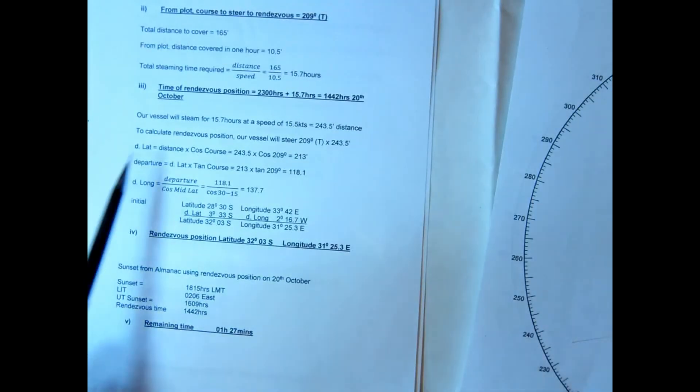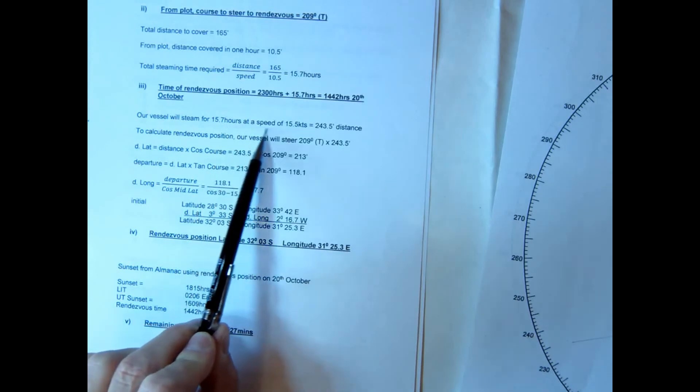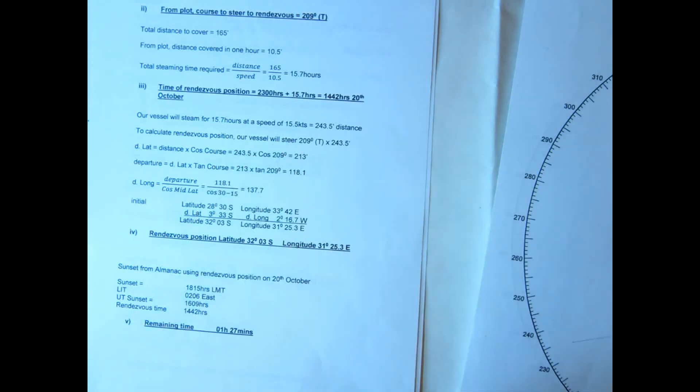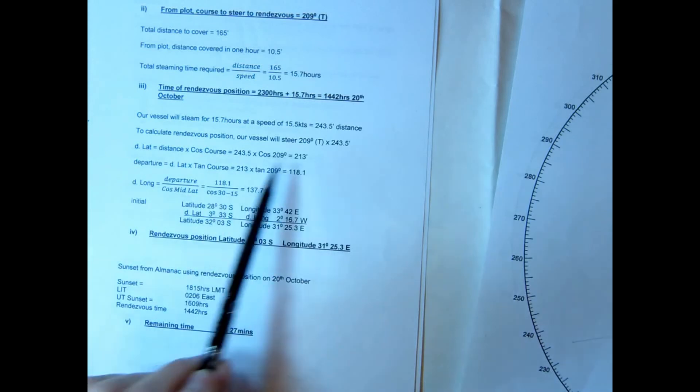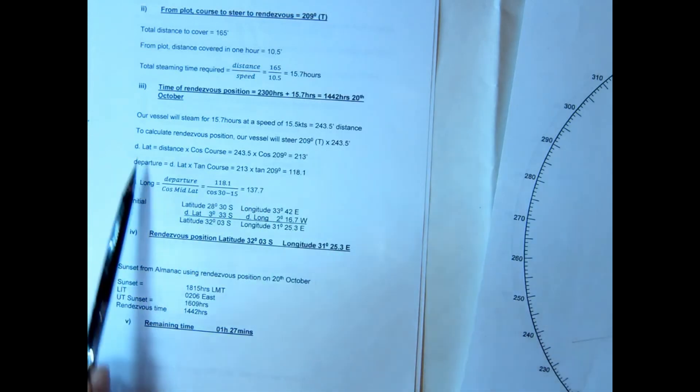Now we need the rendezvous position and the time remaining to sunset. Our vessel is going to steam for 15.7 hours at 15.5 knots. You could have used either vessel to do this, and that's the distance we've covered. I'm going to calculate our rendezvous position steering 209 covering that distance.